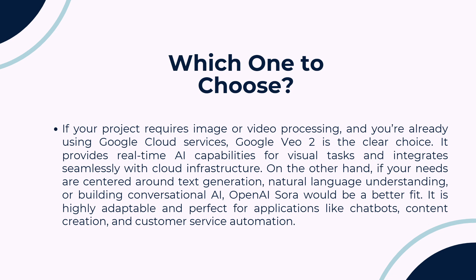It's built for real-time visual tasks and scales seamlessly. On the other hand, if you need a flexible solution for text-based AI like chatbots or content generation, OpenAI Sora is your best bet. It's powerful for natural language processing and offers easy integration via API.